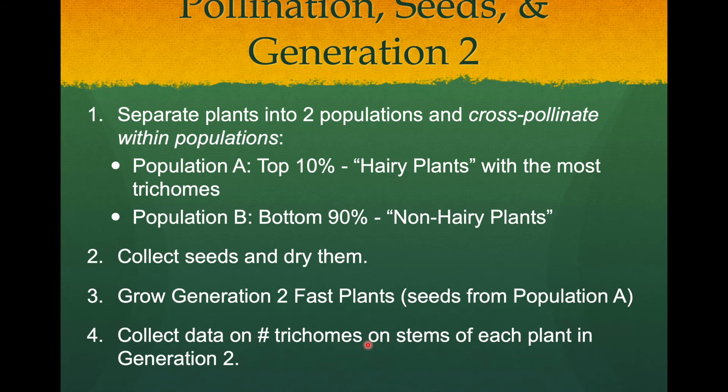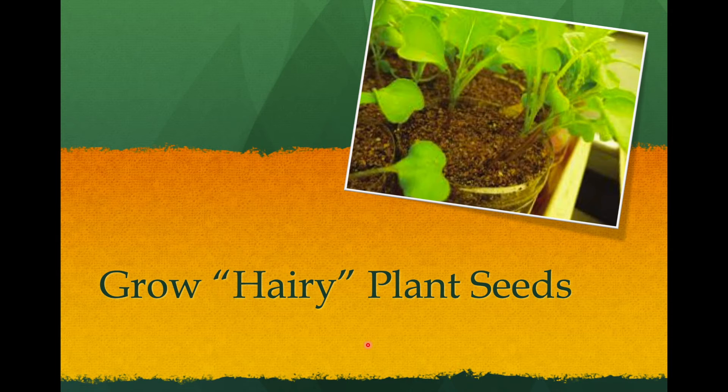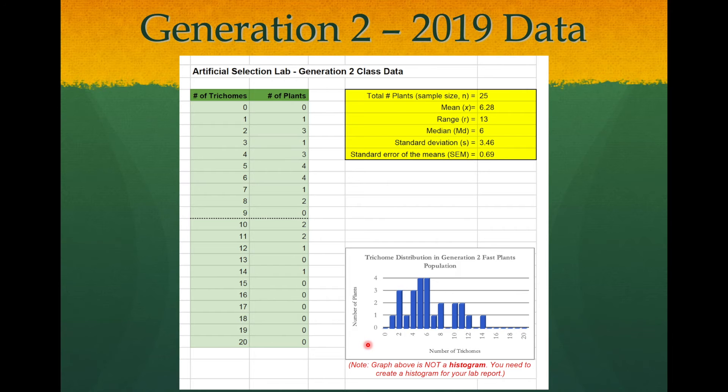For generation two, what we're going to do is take the seeds from generation one and from the hairy plant subgroup, let them dry and then plant those little seedlings and take a look at the number of trichomes on that first little section of the stem and collect that data. Since we didn't get a chance to do that in our class, let's take a look at last year's class data.